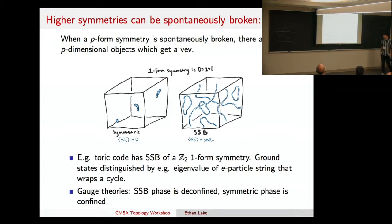So, of course, they can be spontaneously broken, so if I have a p-form symmetry that gets spontaneously broken, then we have some operator that's inserting one of these p-dimensional things, and it gets a vev. So, the left-hand picture would be, I have a one-form symmetry, so I have these one-dimensional conserved things.